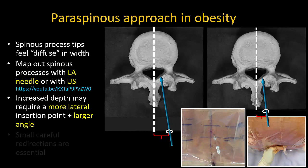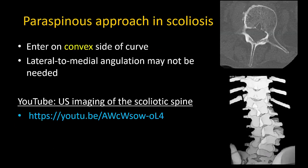When bone is contacted, small careful redirections are essential to walk the needle off the lamina and into the interlaminar space. When employing the paraspinous approach in the scoliotic patient, the needle should be inserted on the convex side of the curve as the interlaminar space is widest there. Because the spine is already rotated, lateral to medial angulation is often minimal. This is covered in more detail in another video specifically dealing with ultrasound imaging for neuraxial blockade in the scoliotic spine.